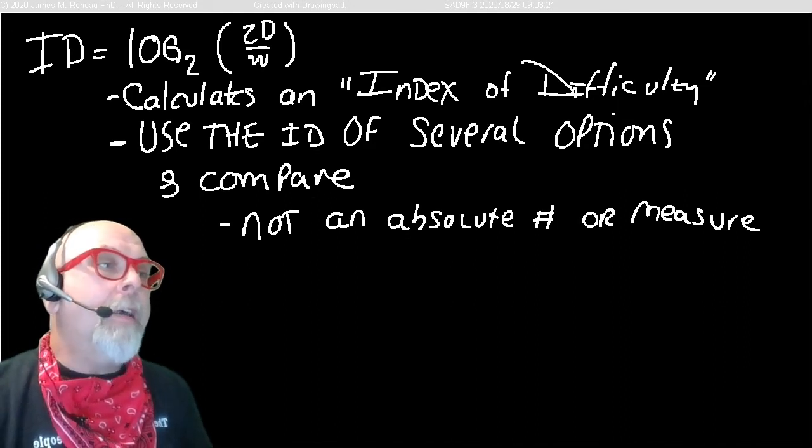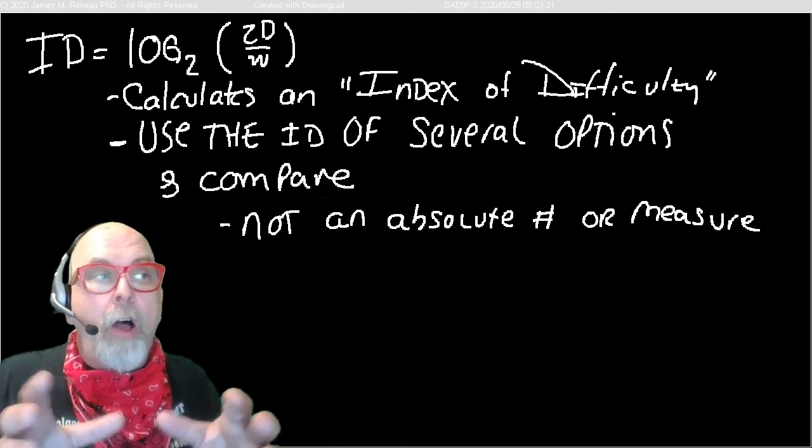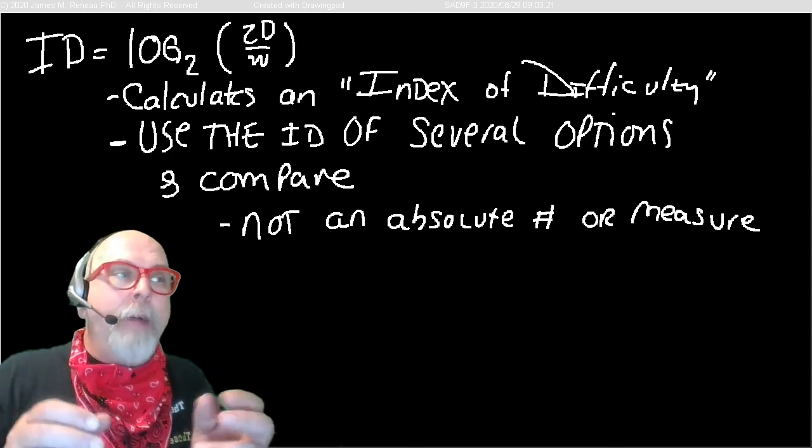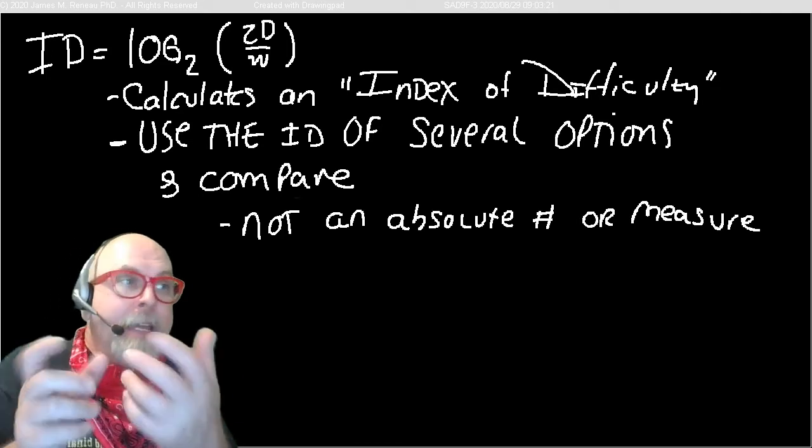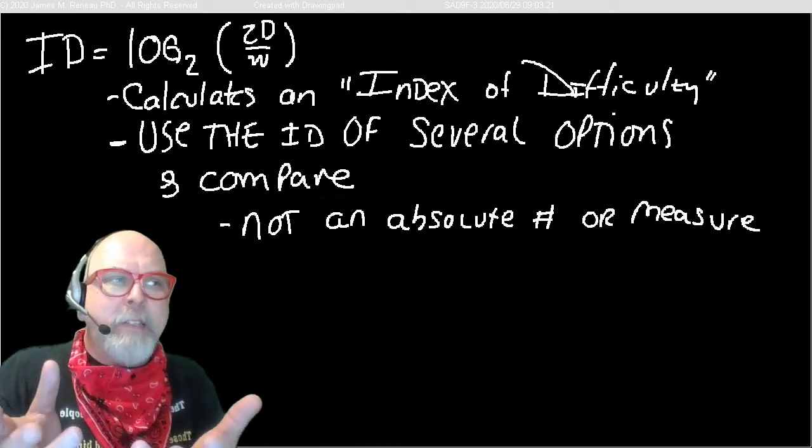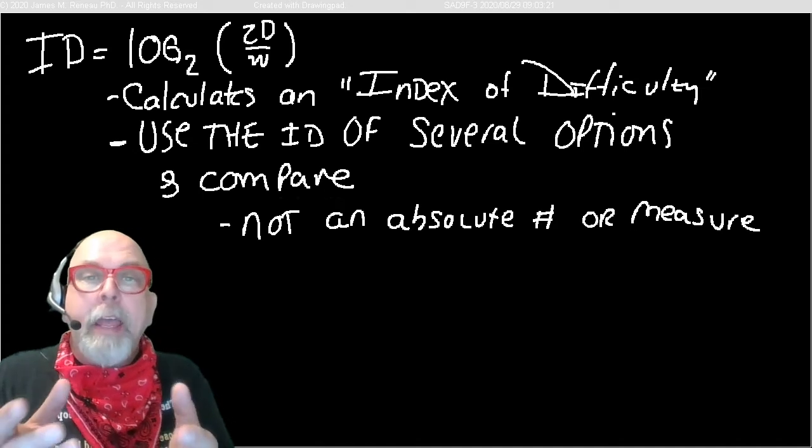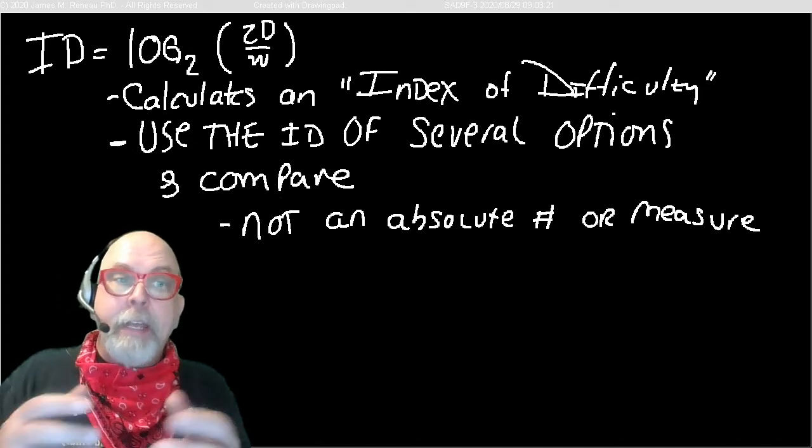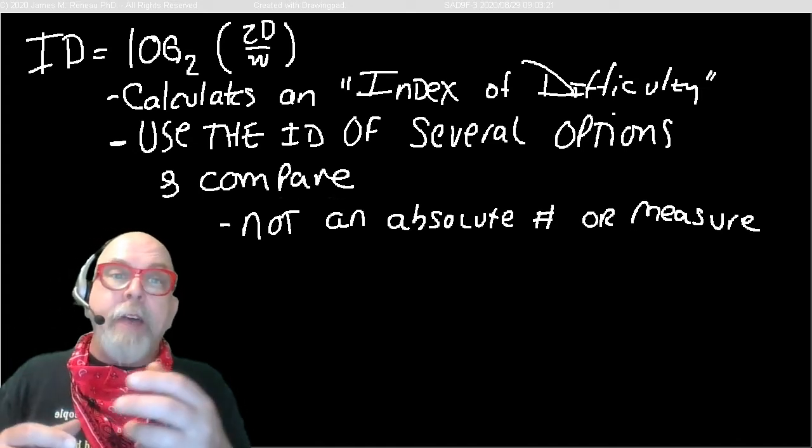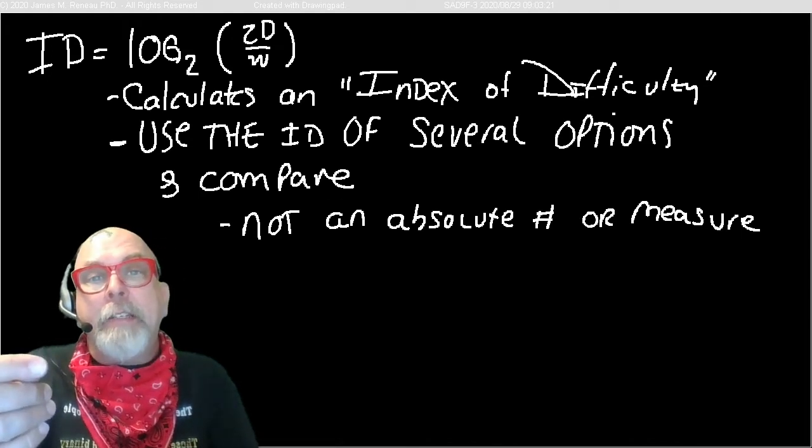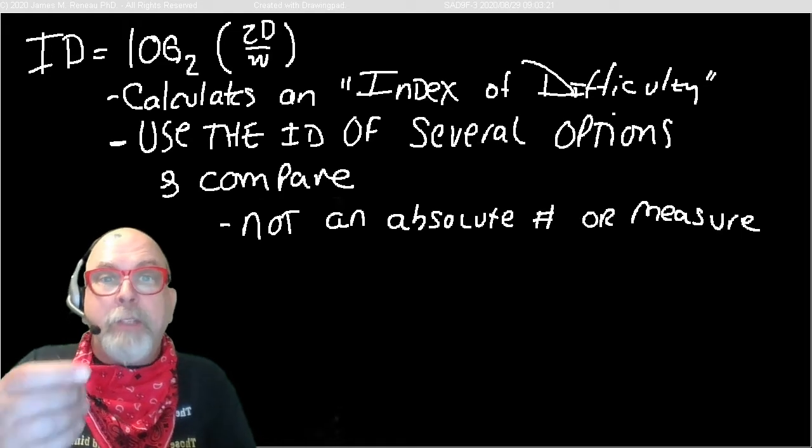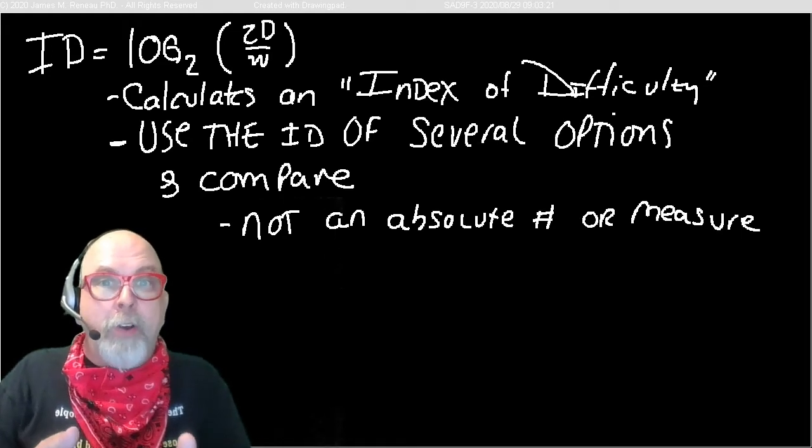Now, the ID should be used to compare alternatives. It's not really an absolute number. To publish an ID and say it's an ID of 3, well, that really doesn't mean anything. But if we have a facility, or we have a piece of software, or we have a design, and we're saying the index of difficulty is least for this one, it's more for this one, and it's the most for this third alternative, then we can make a choice as to which one maybe the user could do quicker.